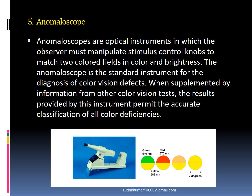The anomaloscope is an optical instrument in which the observer must manipulate stimulus-controlled knobs to match two colored fields in color and brightness — one is presented and the other must be matched. The anomaloscope is the standard instrument for the diagnosis of color vision defects. When supplemented by information from other color vision tests, the results permit accurate classification of all color deficiencies.